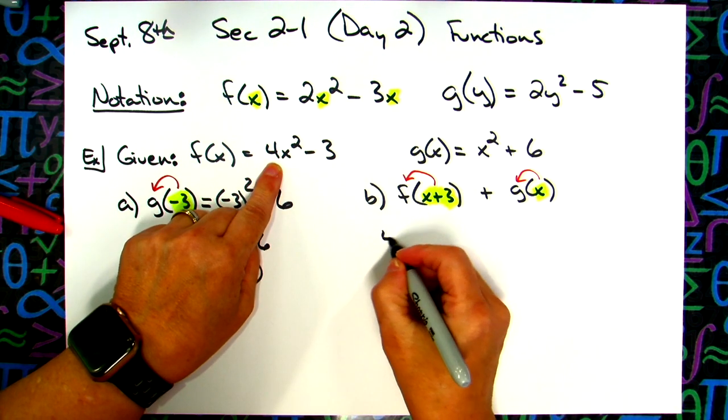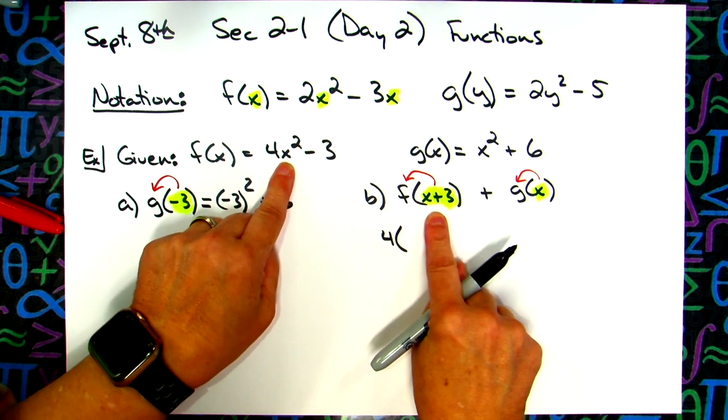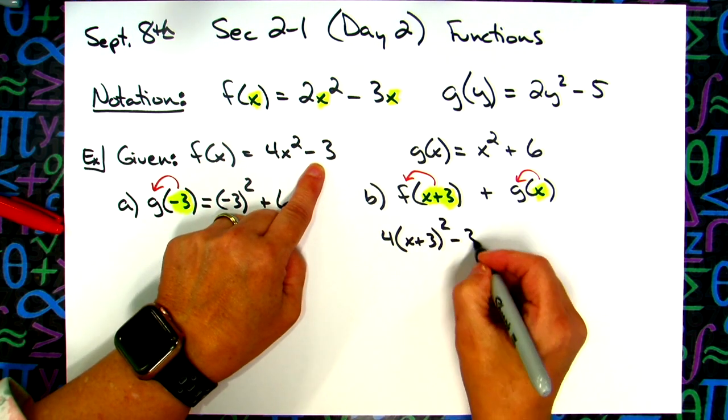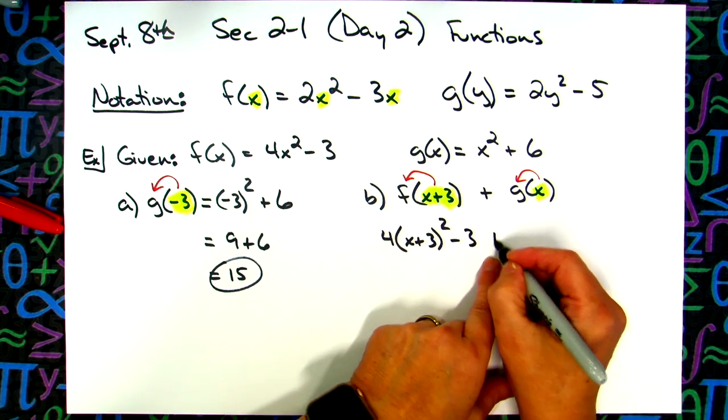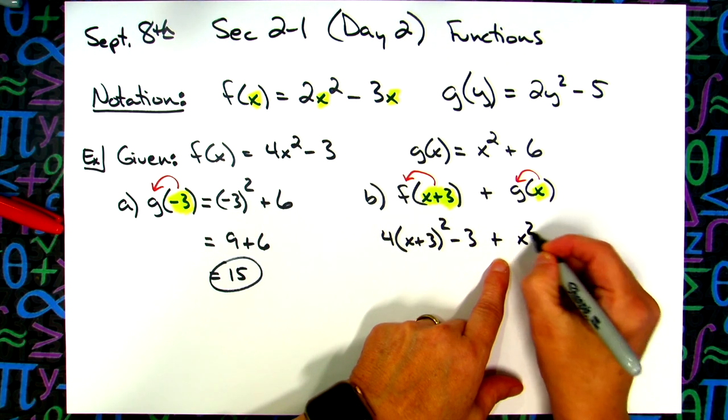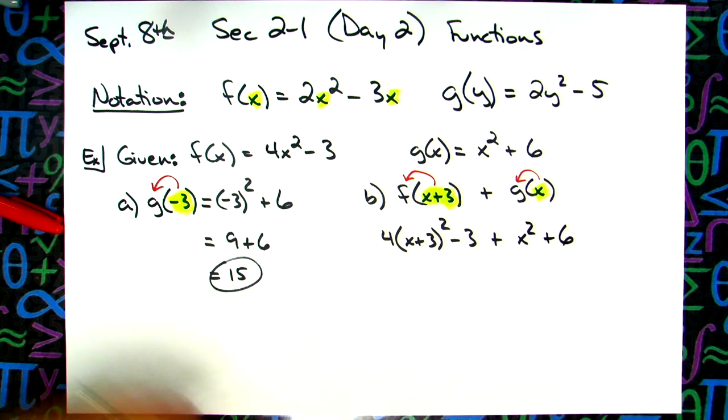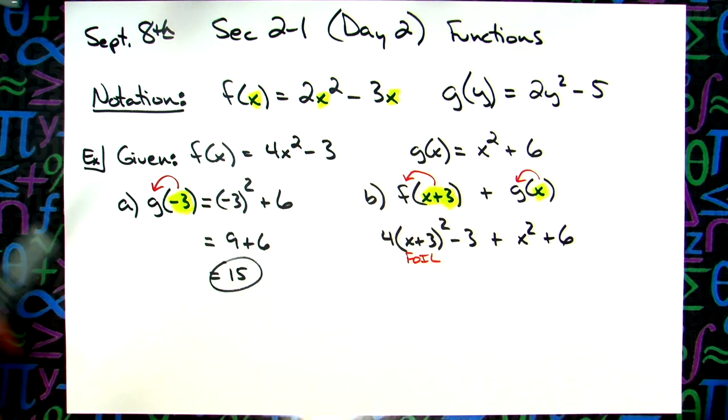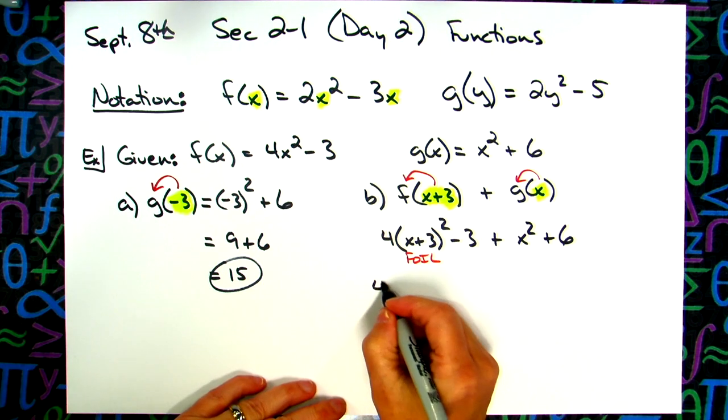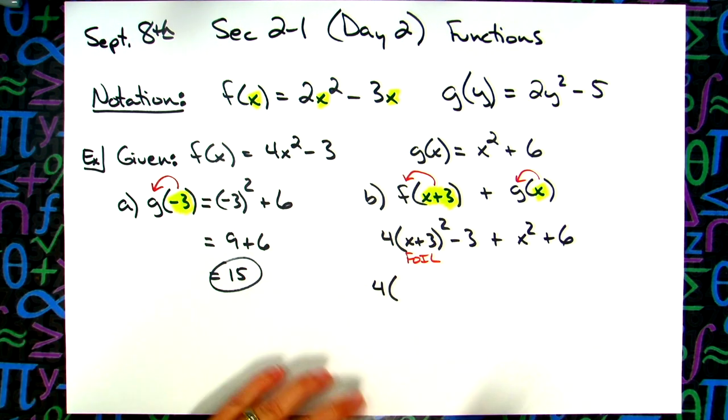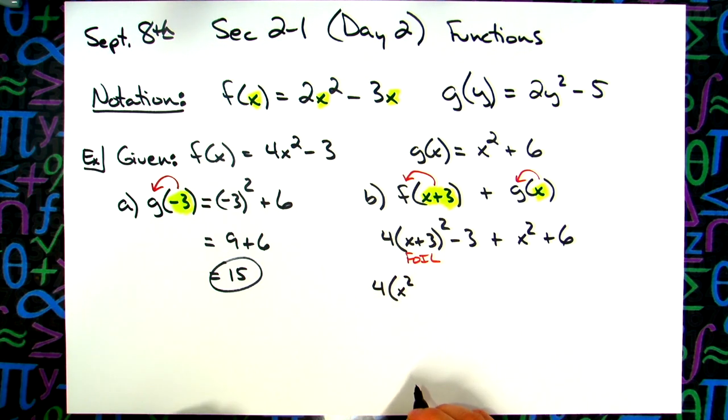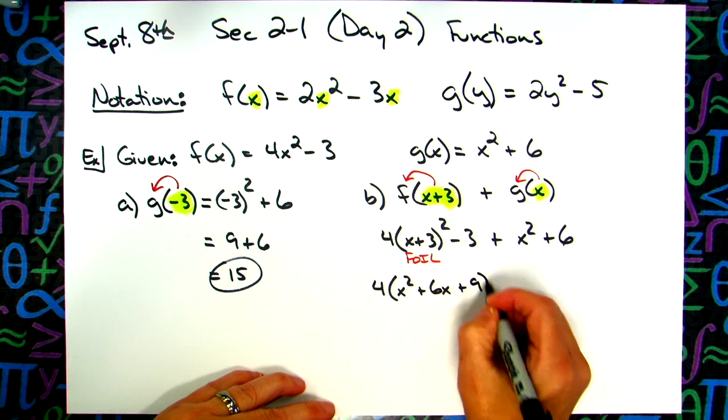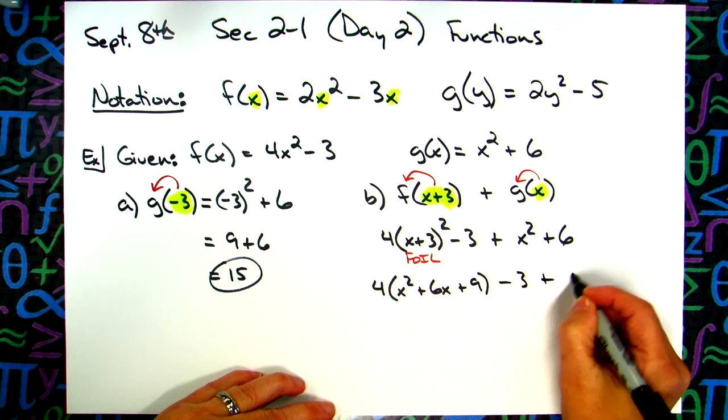f of x plus 3 is telling you to take x plus 3, plug it into the f function, and plug it in every place that there's an x. I only have one place. Now this, you can think of in two different ways. You're just adding the entire function, or you're taking the x and plugging that into the g function, which will give you the exact same thing. So let's plug this in here.